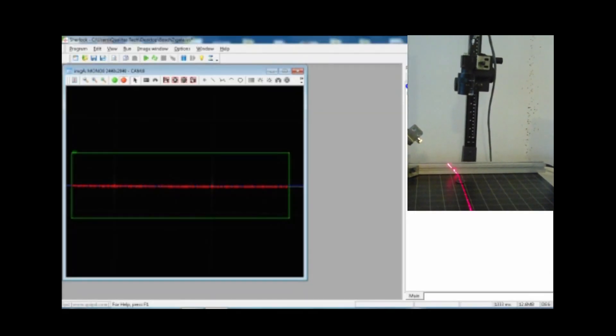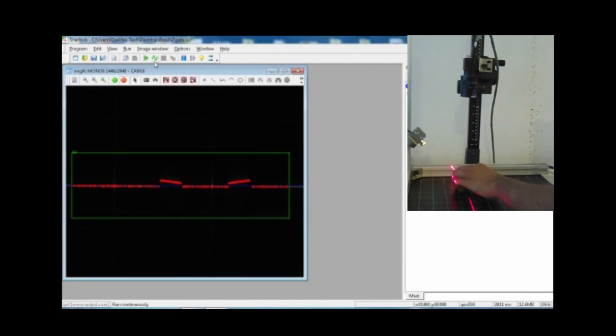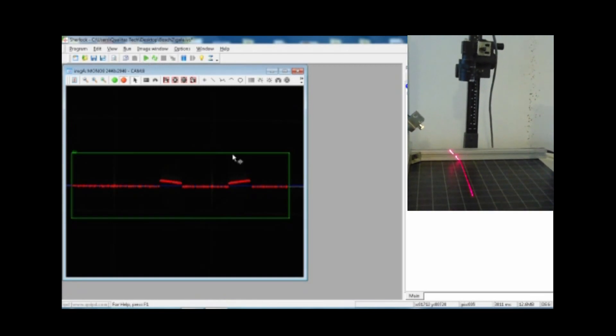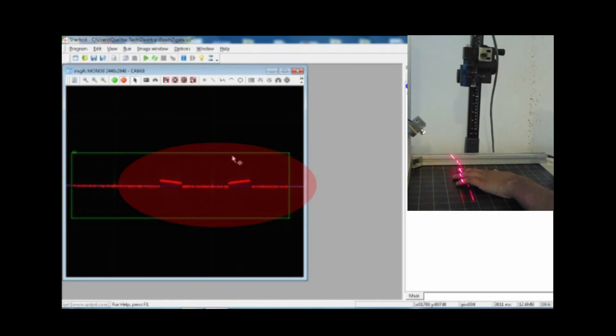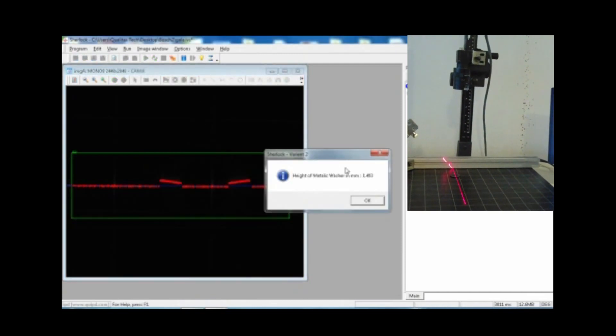As you can see in the video we're going to put a washer in front of the camera and project it with a laser light. The camera sees the profile of the image and can determine the thickness based on a calibration technique that we've used.